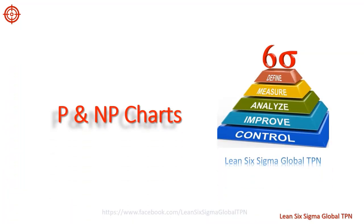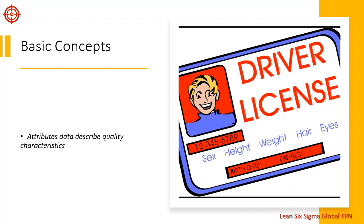Hello friends, let's talk about the p and np charts. So far in this chapter we have used control charts to monitor continuous variables made from a process. Often, however, our process does not produce continuous data. Instead, we may have data that simply indicate the presence or absence of an attribute.